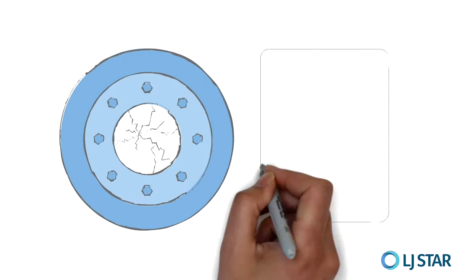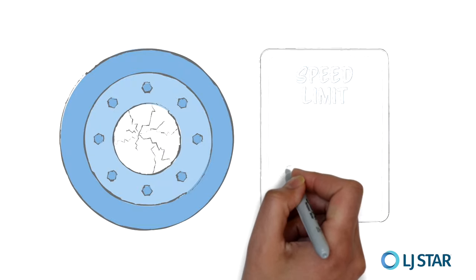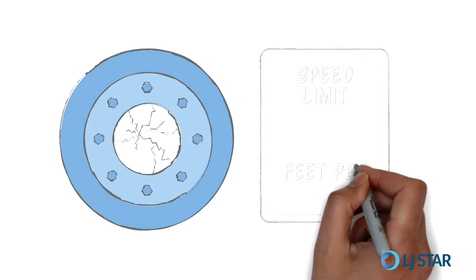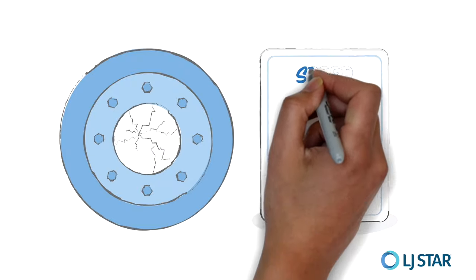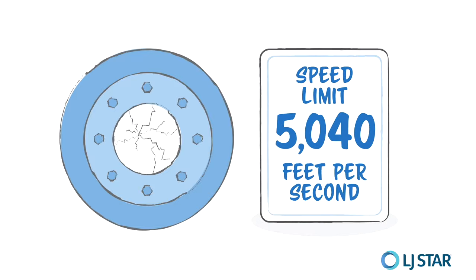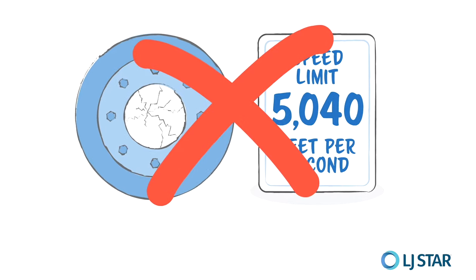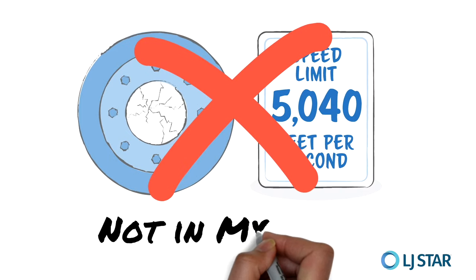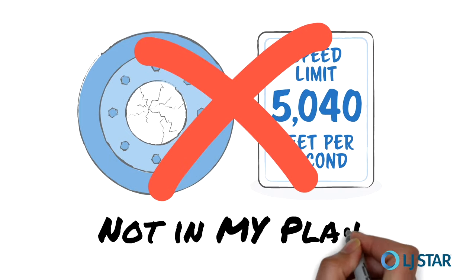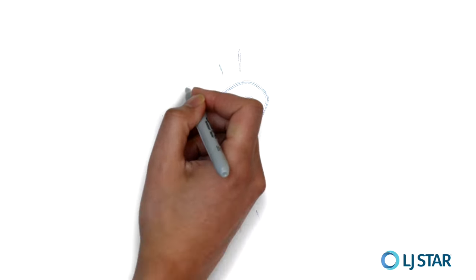You don't even want to think what that would be like in a sight glass in your plant. If you consider how exploding glass in a process application moves at 5,040 feet per second, that's a quality and safety problem for any critical process application. Even if the glass doesn't totally shatter, you can't have any cracks or breakage at all — you risk glass shards contaminating your batch.